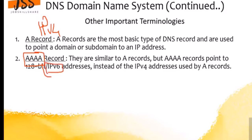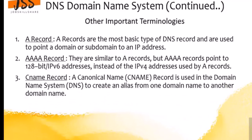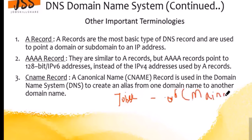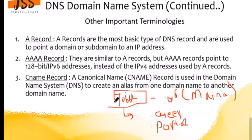Then we have the CNAME record — also known as the canonical name. For example, jobskillshare.org is your main domain. Under that main domain, you can have subdomains like a careers portal or other subdomains. Your main domain name is at the top, and under it you're creating multiple aliases — this is the canonical name. The CNAME record is used in the domain name system to create an alias.